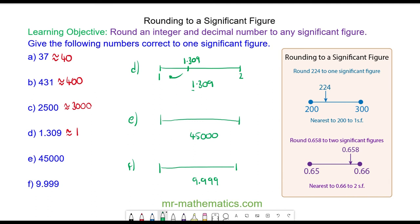Question E: it is between 40,000 and 50,000 because 4 is the most significant figure. Because it lies exactly halfway between the two, we round it up to 50,000. So 45,000 is approximately 50,000 to one significant figure.